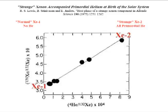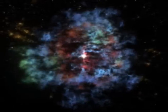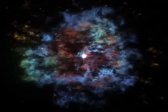Strange xenon, XE-2, came from the outer layer of the supernova that produced the solar system. Light elements like helium were abundant there.